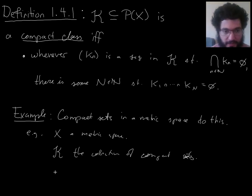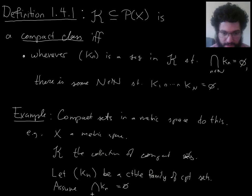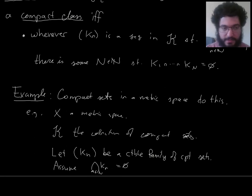So let's think about this. Why is that true? Let kn be a countable family of compact sets, compact subsets of a metric space x. And assume that the intersection of the kns is empty, if you intersect all of them.